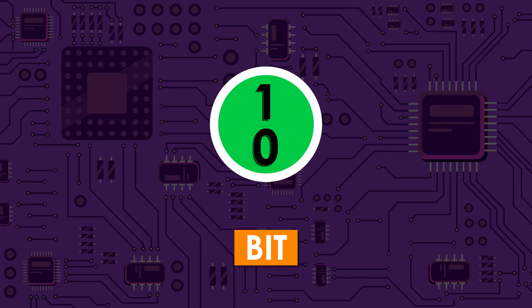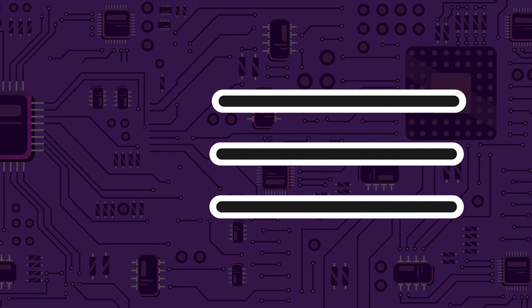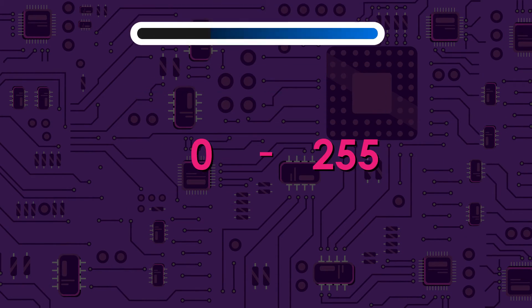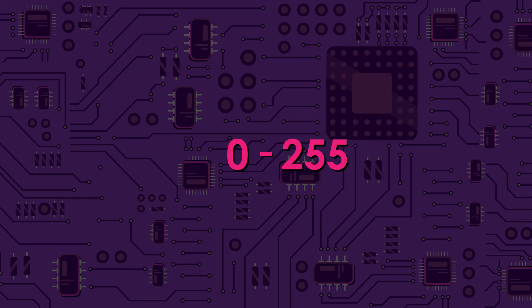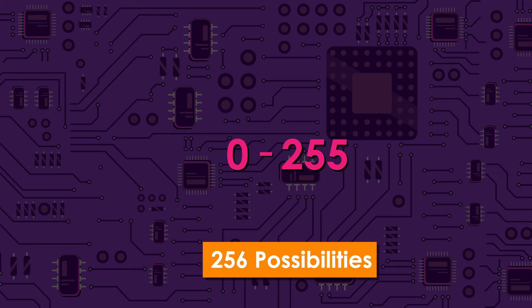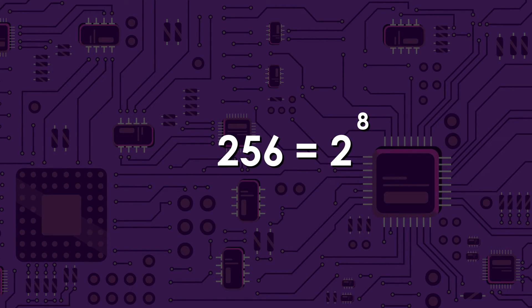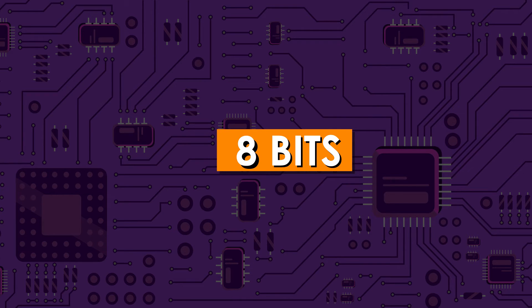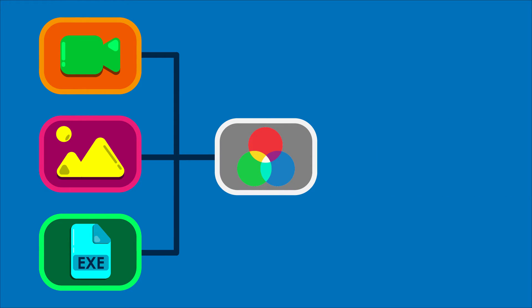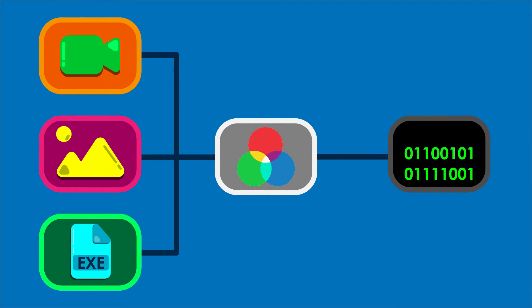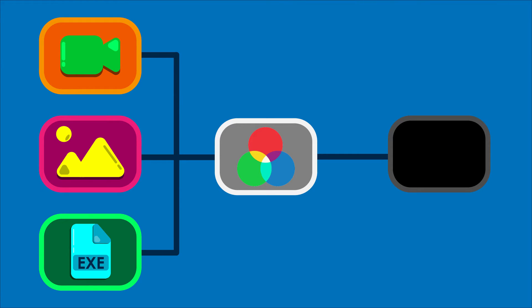A bit can be represented as 2 to the power of 1, with the RGB value ranging from 0 to 255. With 0 inclusive, there are 256 possibilities, and this equals 2 to the power of 8. Each main color value is represented by 8 bits or 1 byte. Videos, images, and programs store the RGB values of each pixel in binary code, and the appropriate color is then displayed and made visible to the viewer.